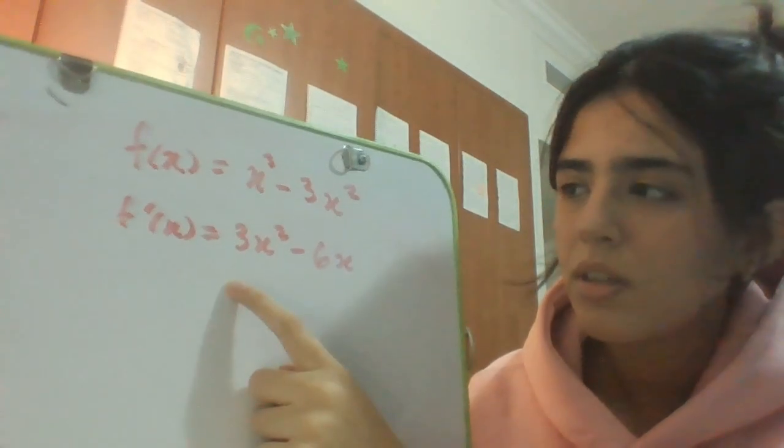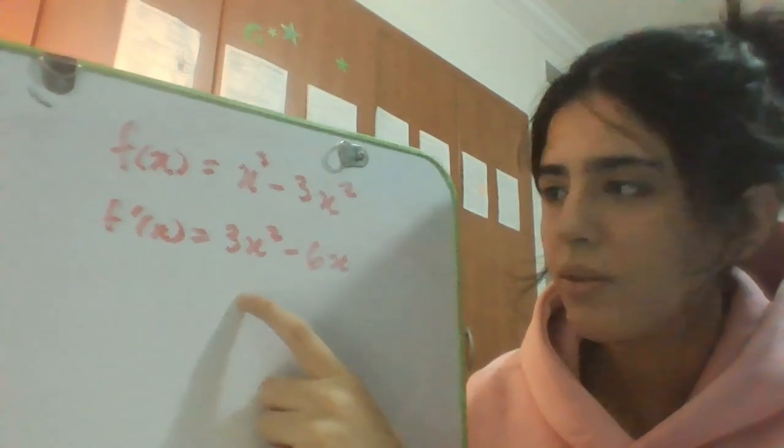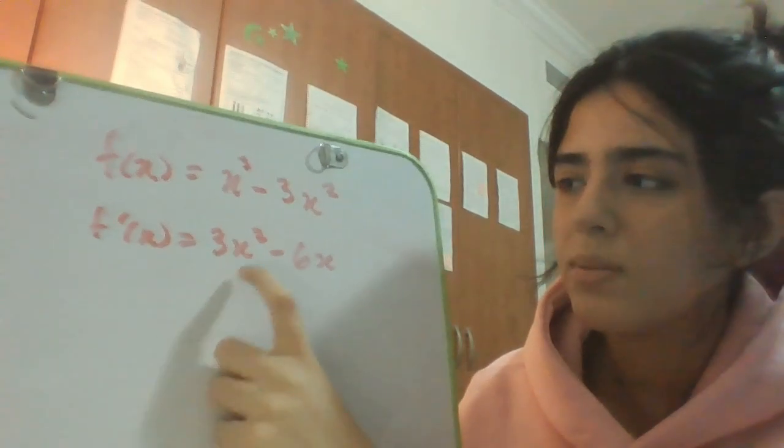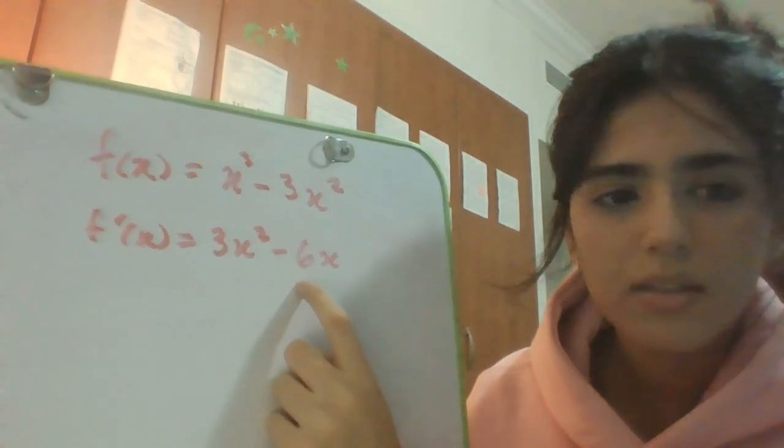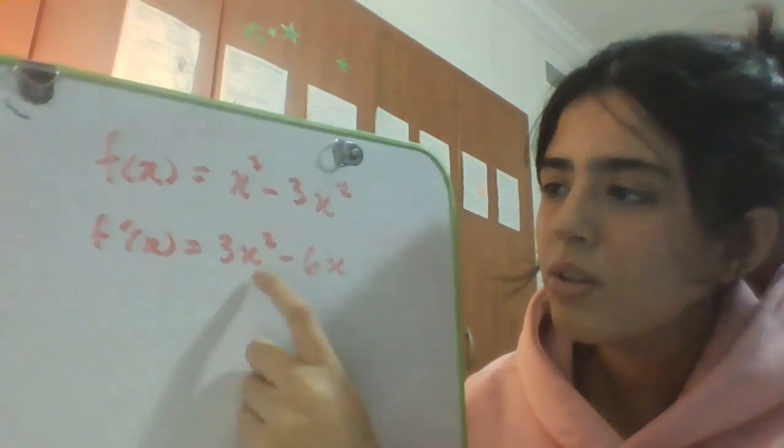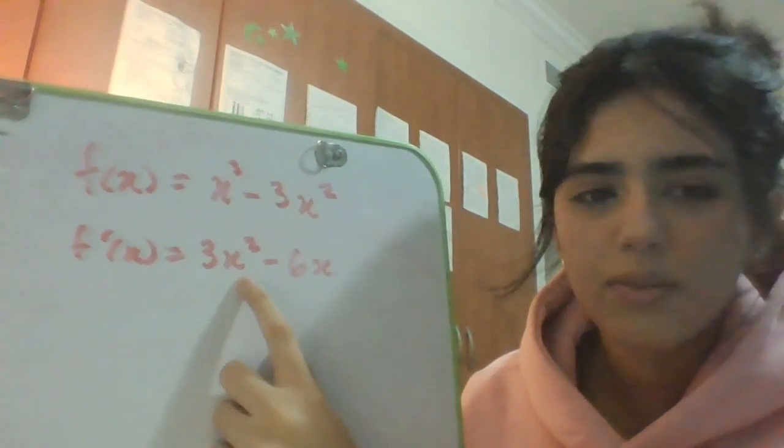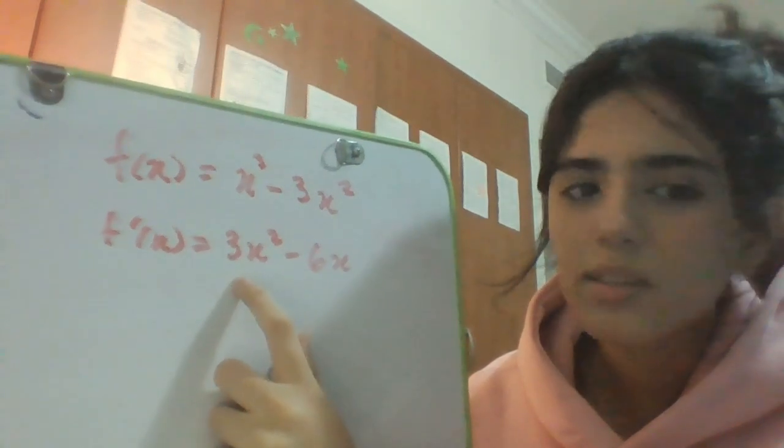You can try dividing each term by 3. If you divide this by 3 you'll be left with x². If you divide this by 3 you'll be left with 2x, so you can take out a 3. Now look at the variable. You can take out an x from each one. If you divide this term by x you'll be left with 3x, and if you divide this term by x you'll be left with -6.